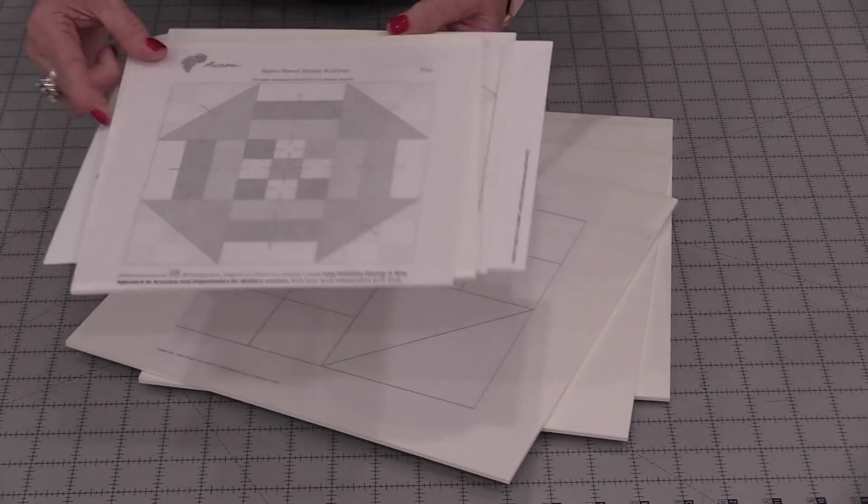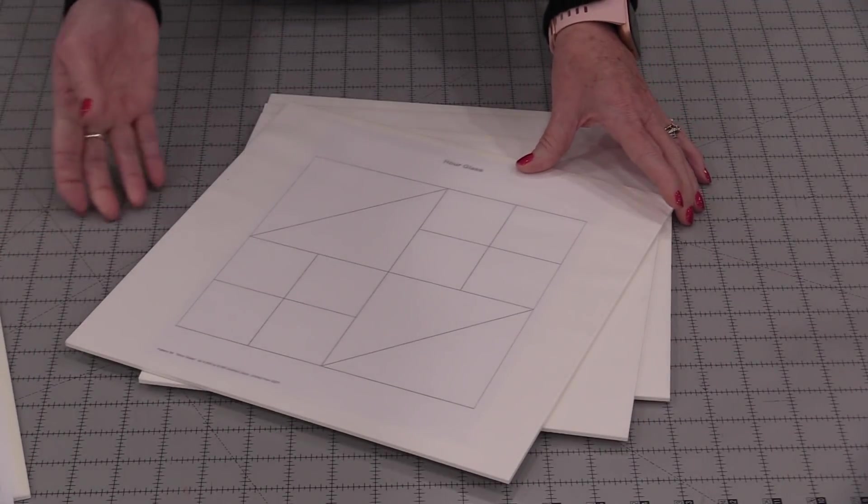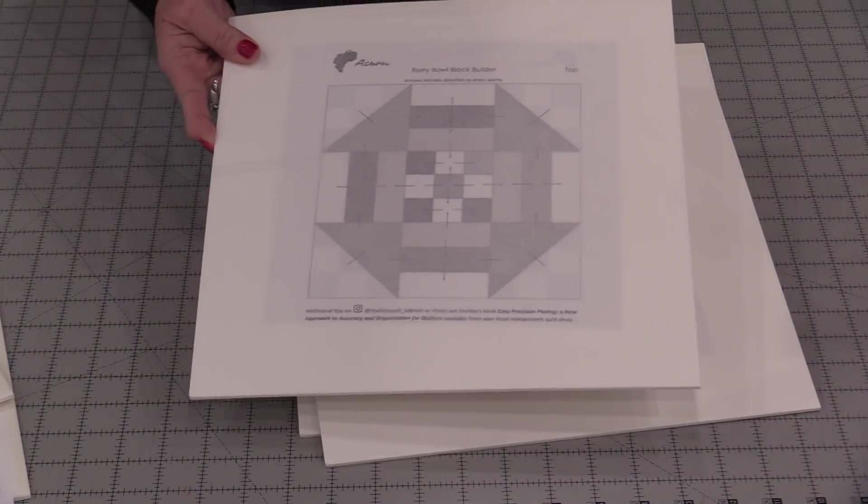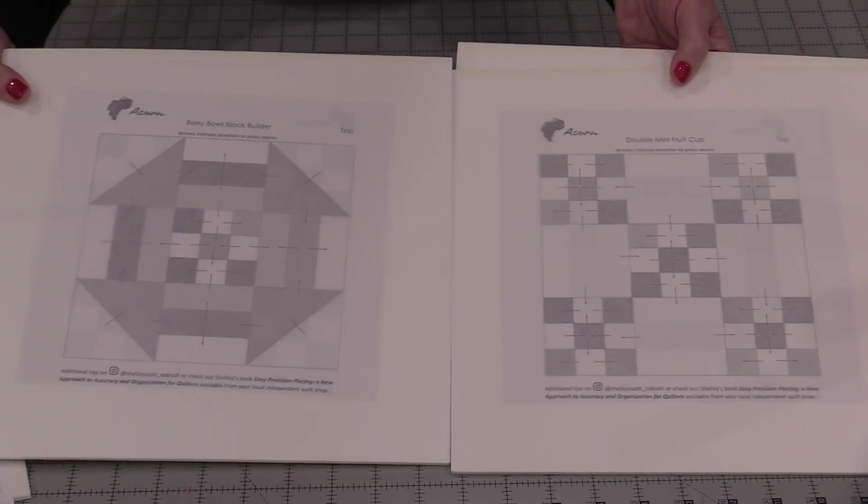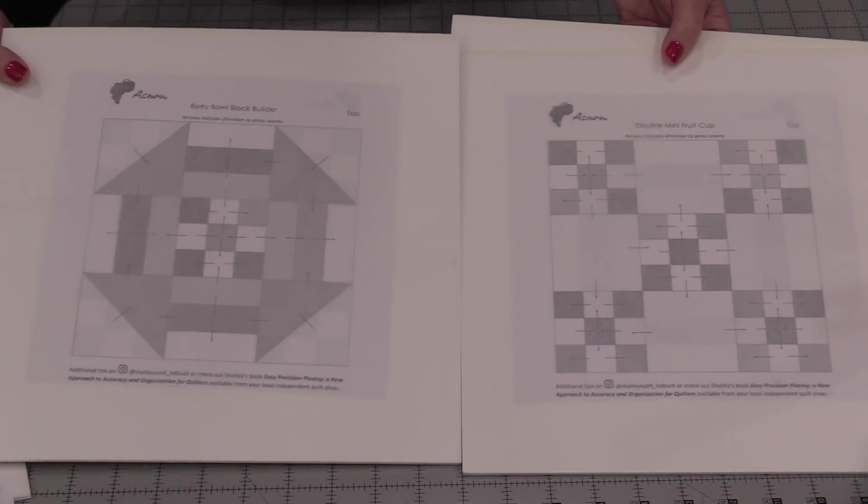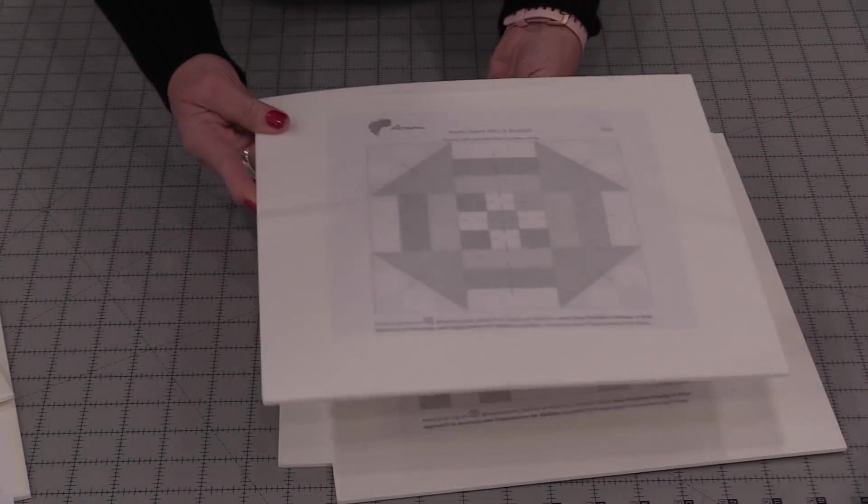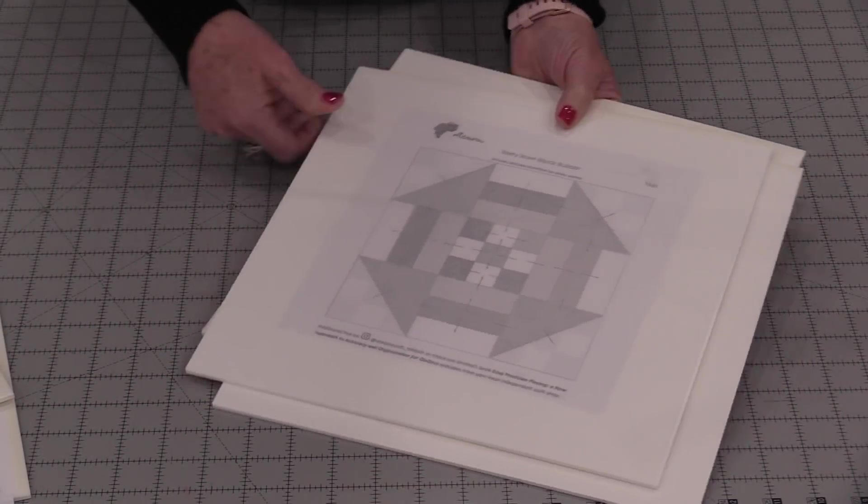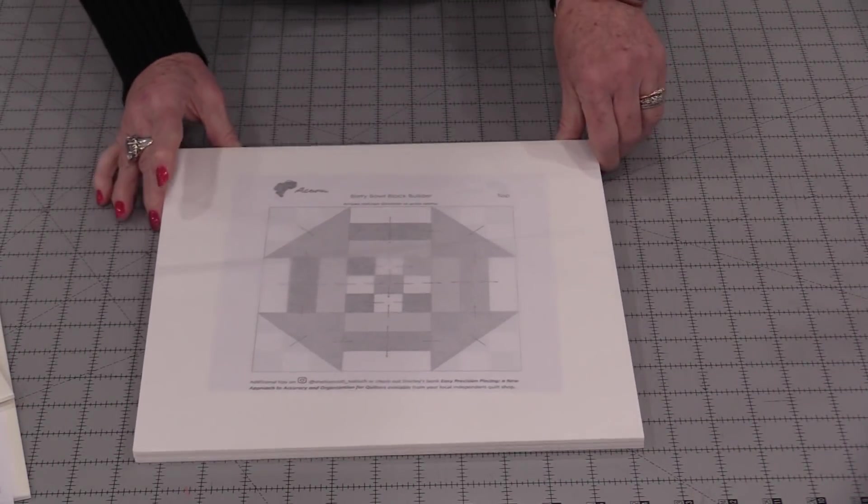You can put any designs underneath them. You can draw your own designs or print out your own designs. If I'm doing a project and it has two different blocks, I'm going to use two different block builder bases. That way all of my fabric and my blocks are going to stay together. They're lightweight, they don't take up a lot of room, so they're easy to keep yourself organized.